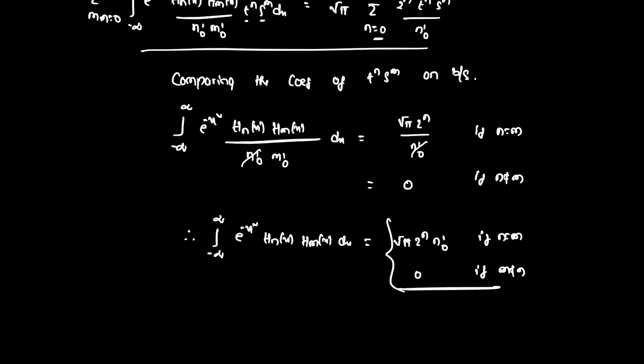This proves the orthogonal property. Therefore: integral from minus infinity to infinity of e^(minus x²) H_n(x) H_m(x) dx equals root pi · 2^n · n! if n equals m, and 0 if m is not equal to n. All the best. Thank you.